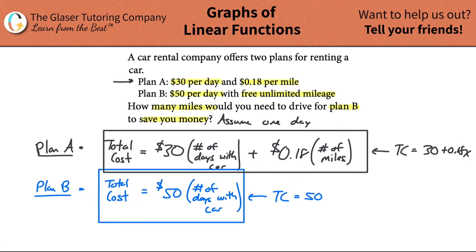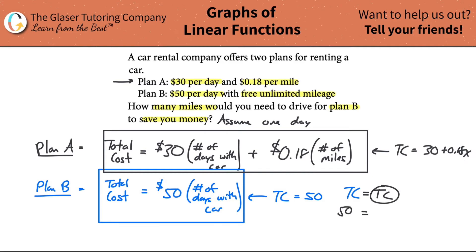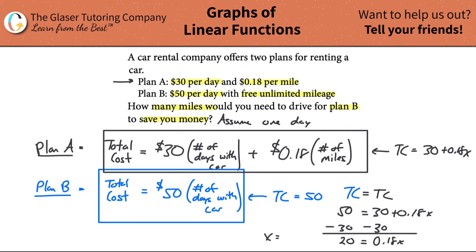To figure out which plan is cheaper, let's find when they're equal. Setting total cost of Plan B equal to total cost of Plan A: 50 = 30 + 0.18X. Subtracting 30 from both sides gives 20 = 0.18X. Dividing both sides by 0.18, we get X = 20 ÷ 0.18, which works out to approximately 111.11.